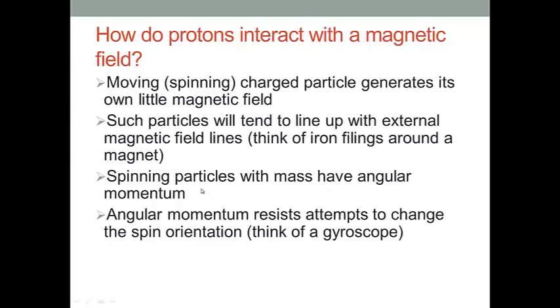Also, because the particles are spinning and have mass, they generate angular momentum. This angular momentum resists attempts to change the spin orientation. The external magnetic field makes the moving charged particle line up with itself. However, the spin will hold it away from the external field line. So that's two things in action.